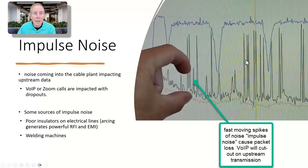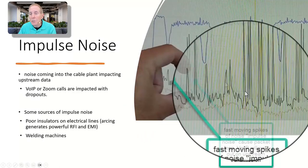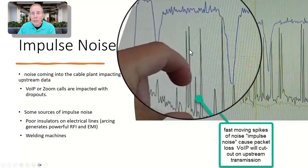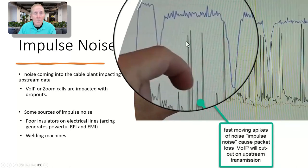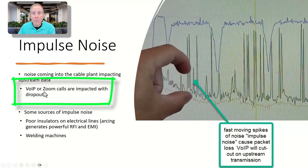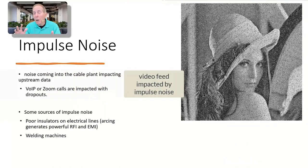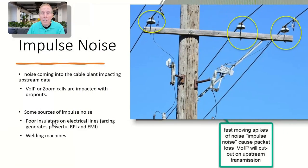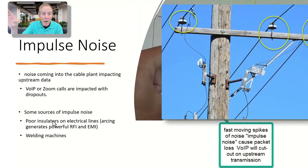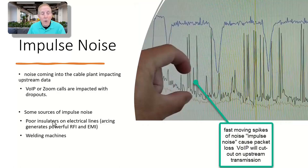Here's a cable signal being impacted by what's known as impulse noise. You can see these small, quick, jagged pulses of noise in the RF signal. These really impact voice over IP or a Zoom call with dropouts. Some of the sources for impulse noise are poor insulators on an electrical line. Let's say you've got a cable telephone pole and you're getting arcing on that electrical line. Or if you've got welding going on in a nearby area and it's leaking into the system, you can get these impulse noise and it really impacts, especially voice over IP.